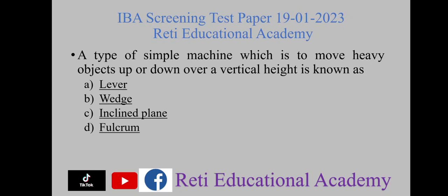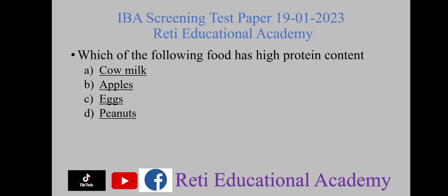Question number seven: a type of simple machine which is used to move heavy objects up or down over a vertical height is known as — A) lever, B) wedge, C) inclined plane, D) fulcrum. The right option is C, inclined plane.